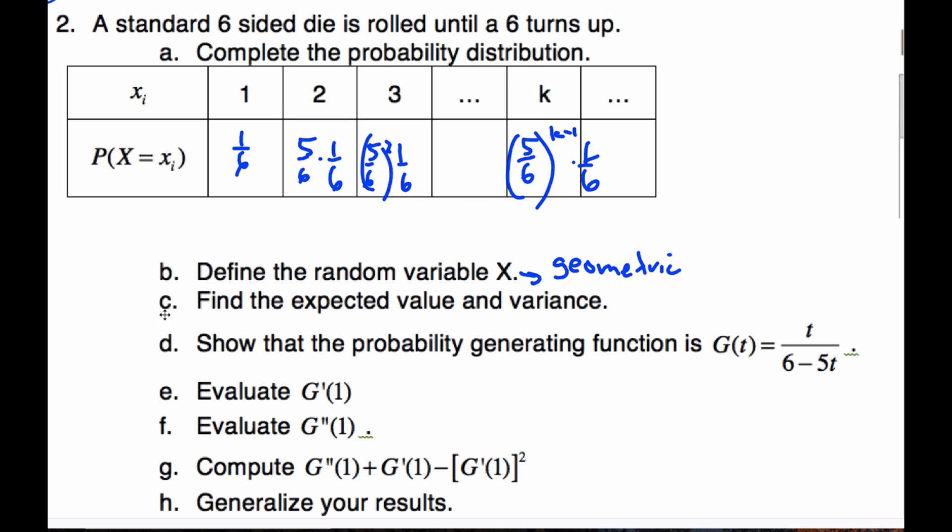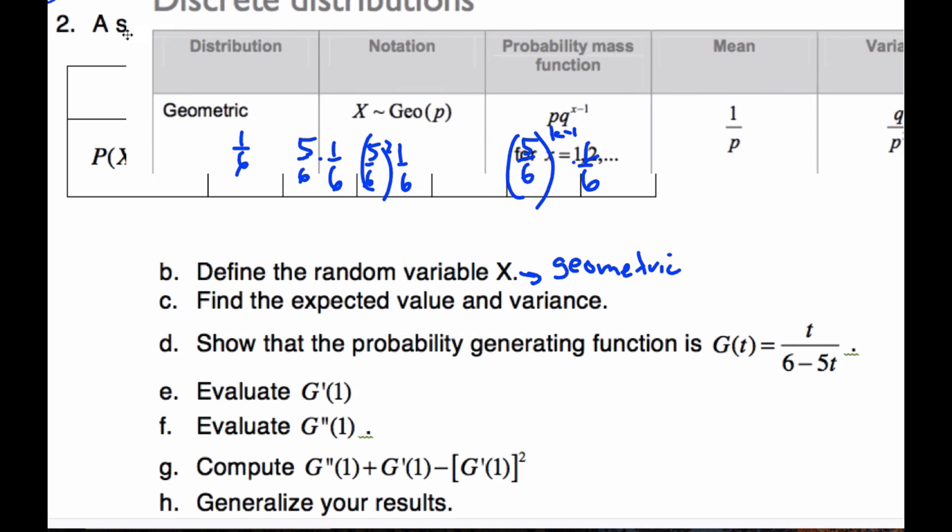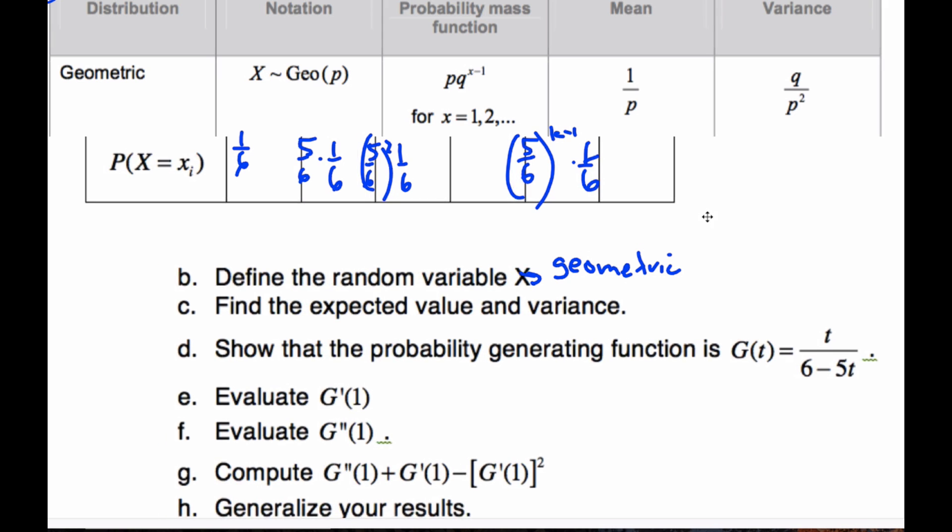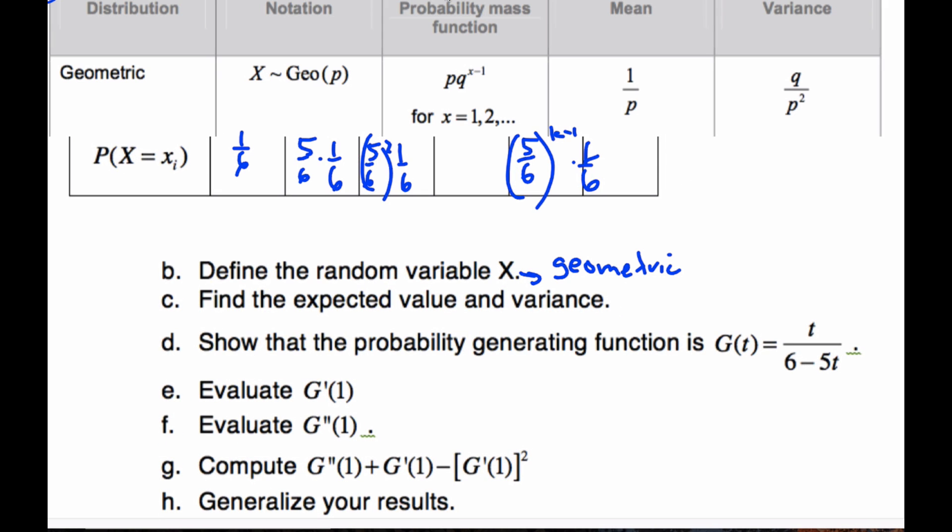So the expected value and variance of this, if we're going to do that, if I refer to my formula booklet, this is what I know about geometric. My expected value is simply going to be, X is going to be one over one-sixth, which is six.